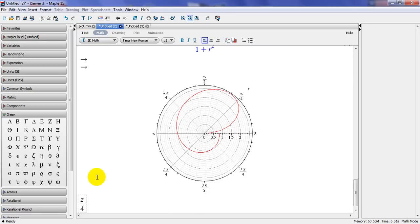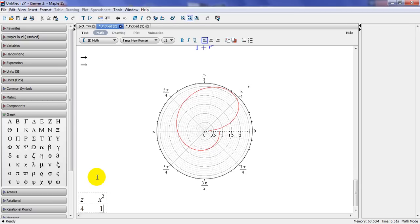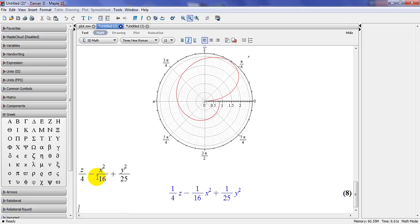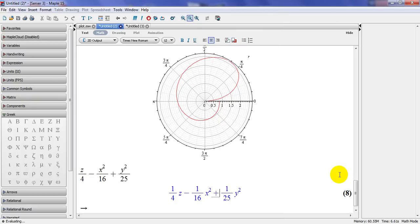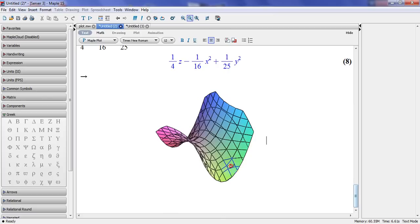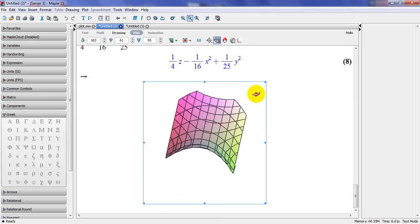If I have X divided by 4 minus X squared divided by 16 plus Y squared divided by 25. And this is the plot. So if you want to plot this. You just go here. Plot. And it recognizes you want a 3D XYZ. And that looks like a saddle shape. This is the shape here.